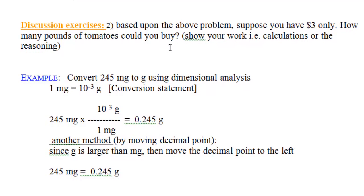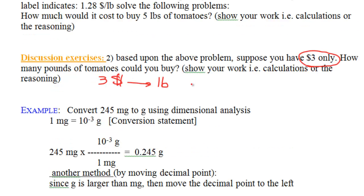For question 2, pause the video and solve before continuing. In this problem you are given $3.00 and asked to find the number of pounds. So now we are converting from dollars to pounds. We still have the relation 1 pound equals $1.28. We start with 3 dollars and multiply by the conversion factor that cancels dollars — dollars in the denominator — to yield the answer in pounds in the numerator.